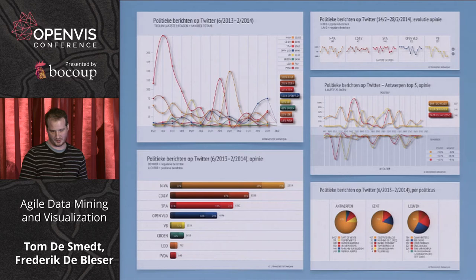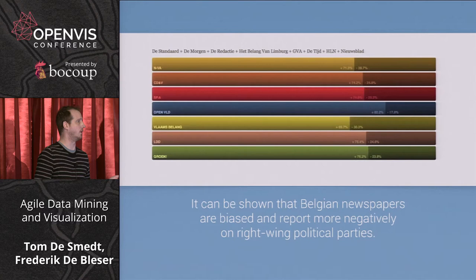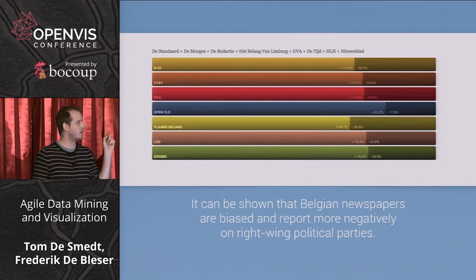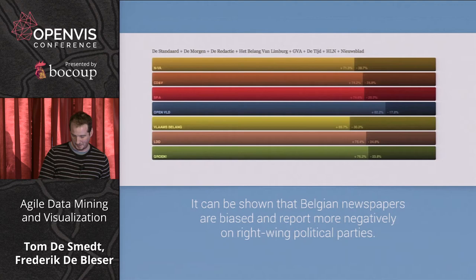Another case study: we looked at Belgian newspaper articles over a three-year period — how many positive versus negative articles were written about political parties. The yellow-orange lines represent the right-wing parties. The dark part of the bar is negative feedback, and you can see that Belgian newspapers consistently report more negatively on right-wing parties. This was a big story in the media when we published these results.